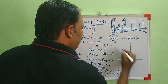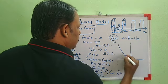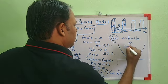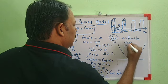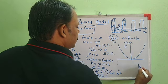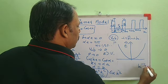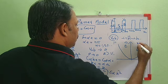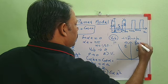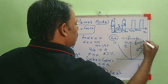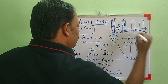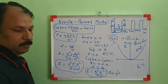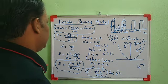The E vs k graph is a parabola for the free electron case. The y-axis is energy E and the x-axis is k. Since E is proportional to k², the graph is a parabola. This is for a free electron inside a crystal, the same as in free electron theory.